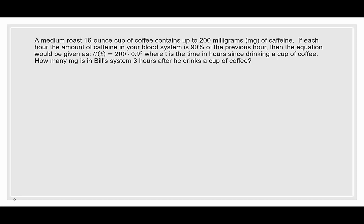How many milligrams are in Bill's system 3 hours after he drinks a 16-ounce cup of coffee? So we plug in t = 3: C(3) equals 200 times 0.9 to the third. We want to be careful that our calculator uses order of operations. After 3 hours, he would have about 145.8 milligrams of caffeine still in his bloodstream.